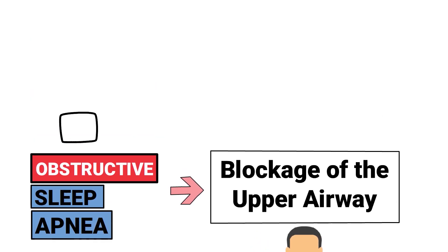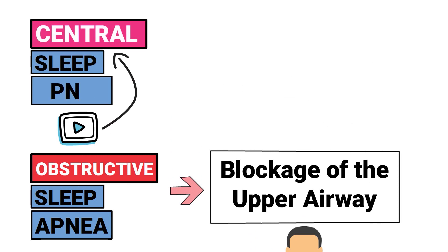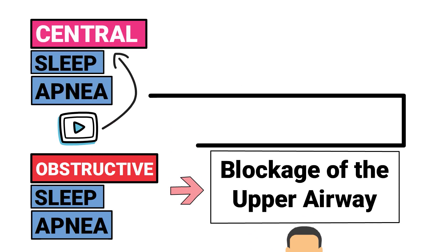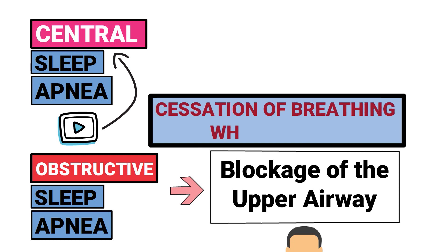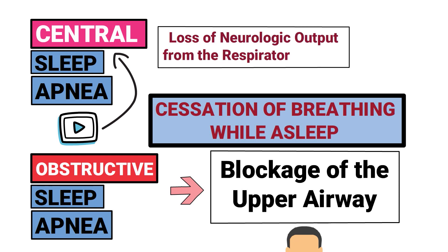For this video we're focusing on central sleep apnea. While both types refer to the cessation of breathing while asleep, central sleep apnea occurs due to a loss of neurologic output from the respiratory center in the brain.